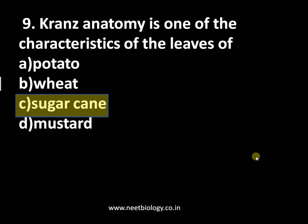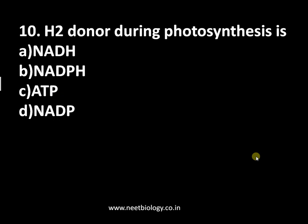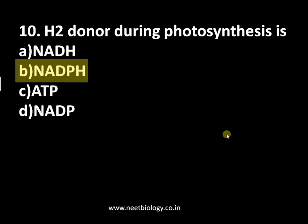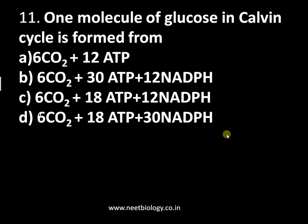Question number ten: the H2 donor during photosynthesis is — options are: A: NADH, B: NADPH, C: ATP, D: NADP. The answer is NADPH. NADPH is a reductant produced during the light reaction of photosynthesis in non-cyclic photophosphorylation using the enzyme ferredoxin reductase.